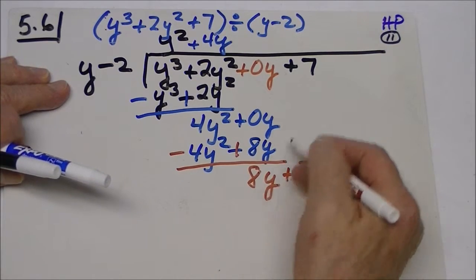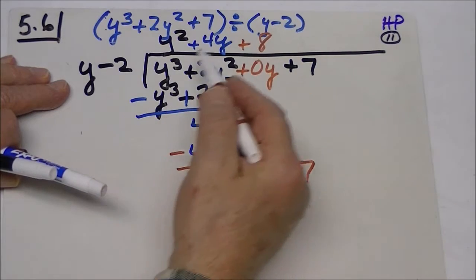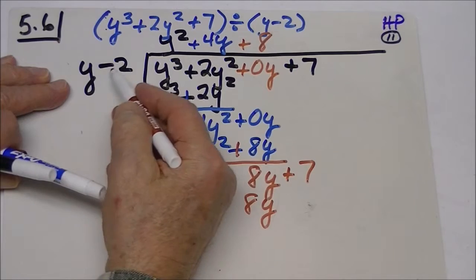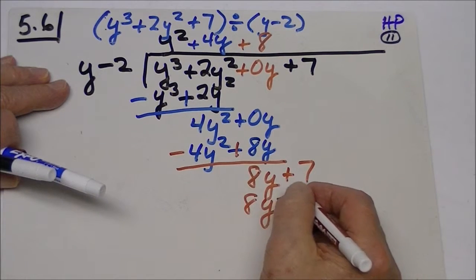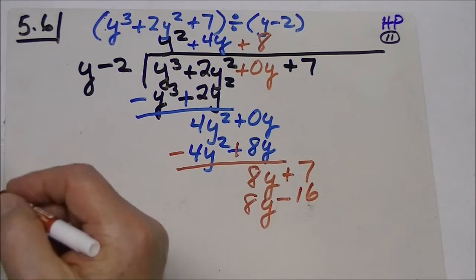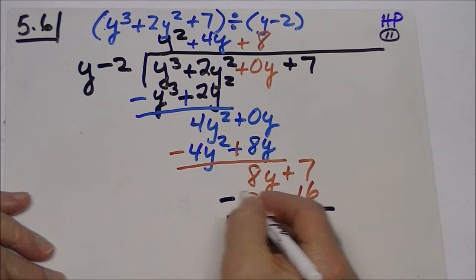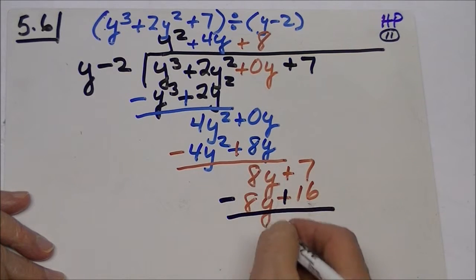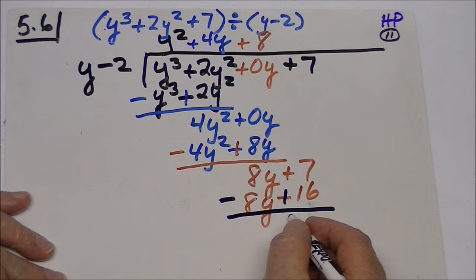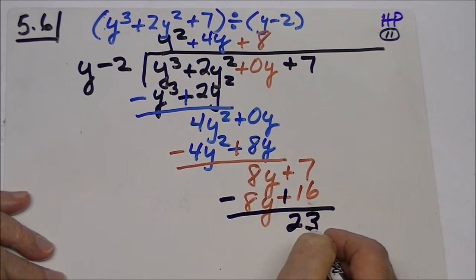And y goes into there eight times. Y times 8 is 8y. A negative 2 times 8 is a negative 16. Again, we draw our line and change signs. This cancels out and this becomes a 23. That will be our remainder.